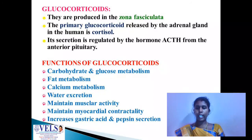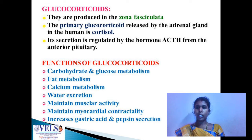Glucocorticoids are produced in the zona fasciculata. The primary glucocorticoid is cortisol, and its secretion is controlled by ACTH hormone, which is released by the anterior pituitary. ACTH stands for adrenocorticotropic hormone.